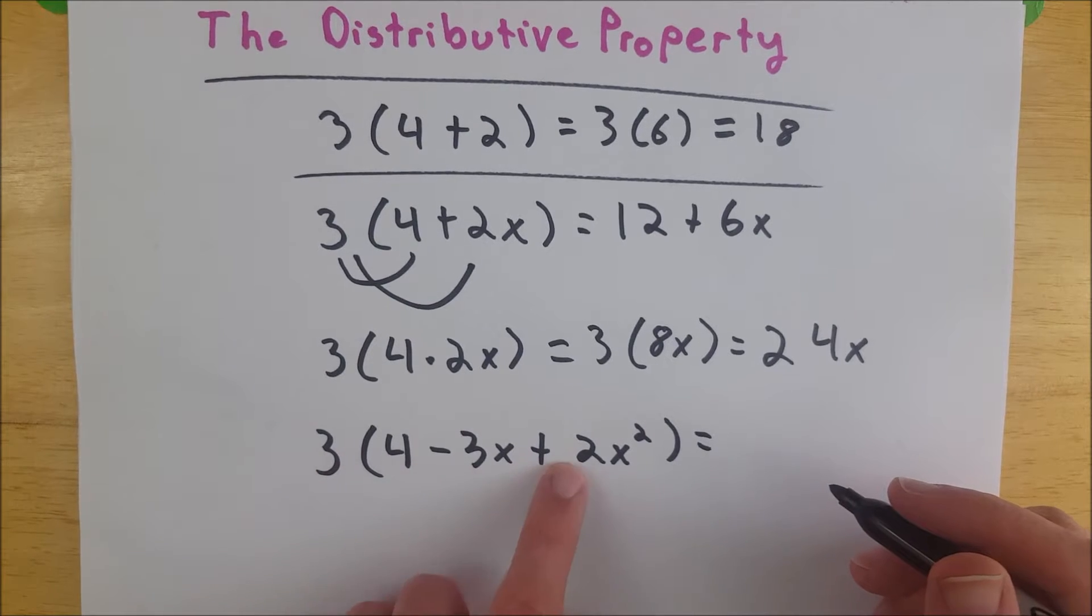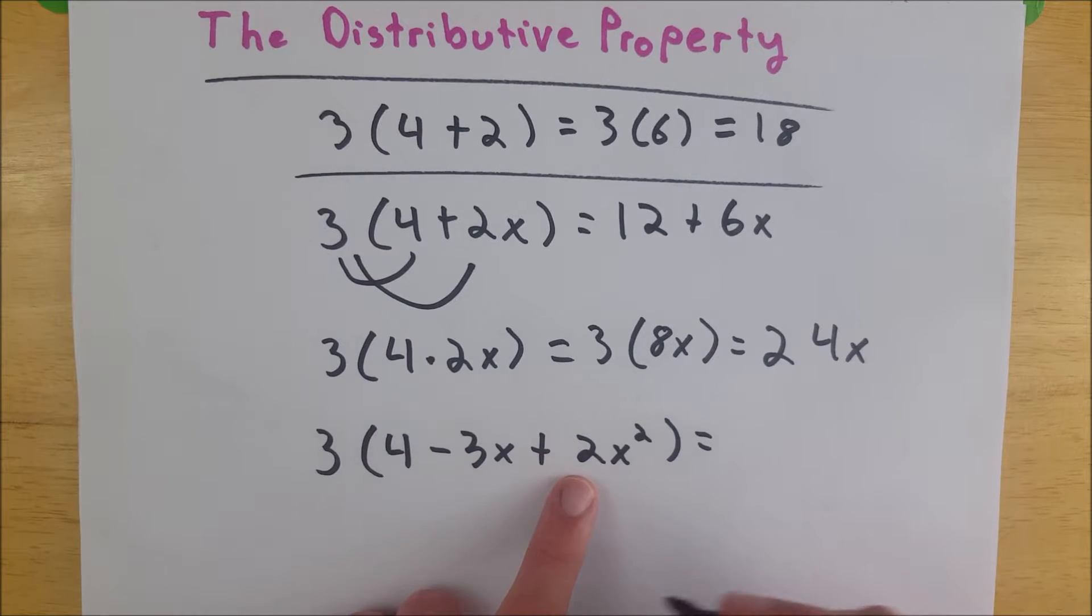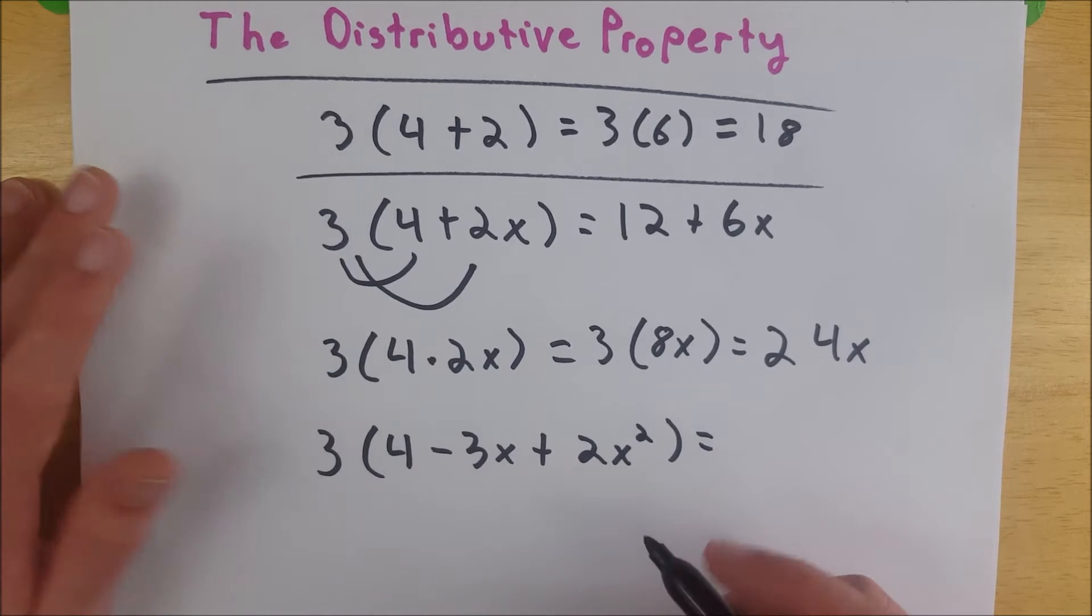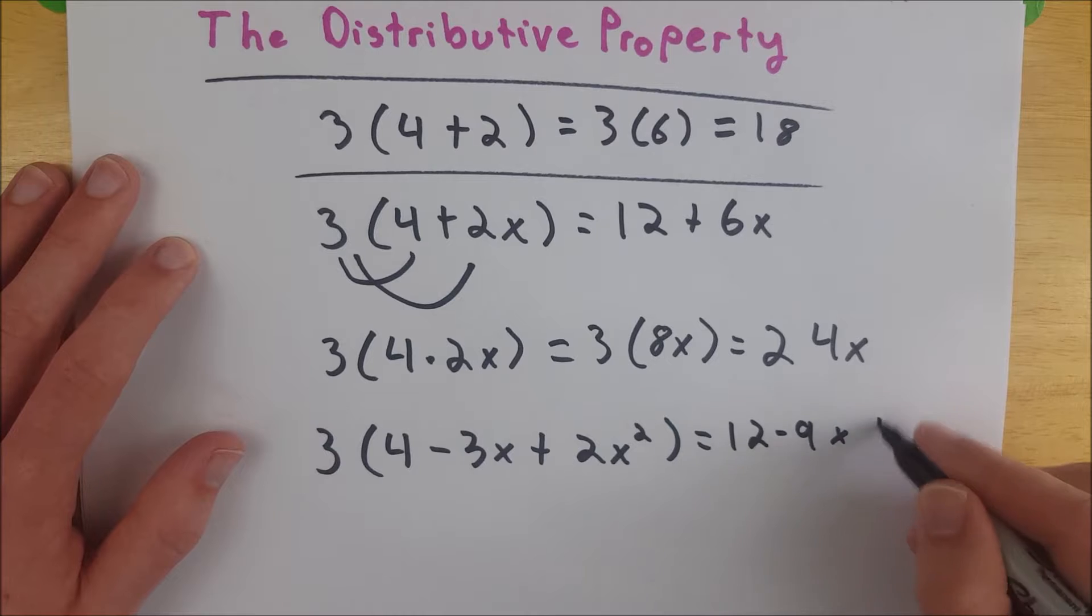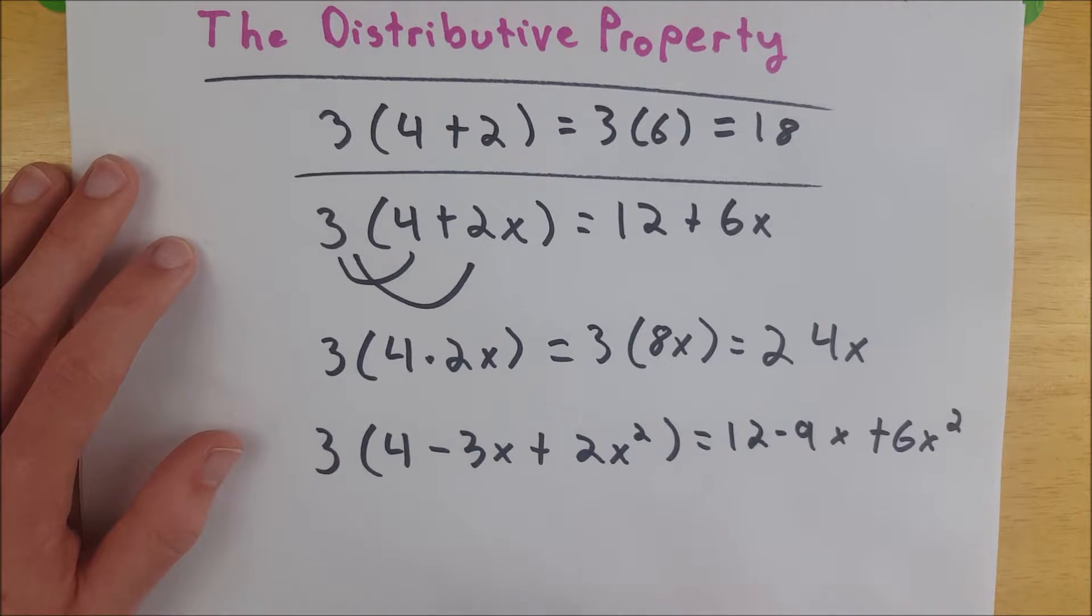So we have to use our distributive property and multiply 3 by everything in the parentheses. Again, if we had division or multiplication in here, we could use that to get just one quantity. But if we have to do this, we get 12 minus 9x plus 6x squared, multiplying the 3 all throughout the parentheses.